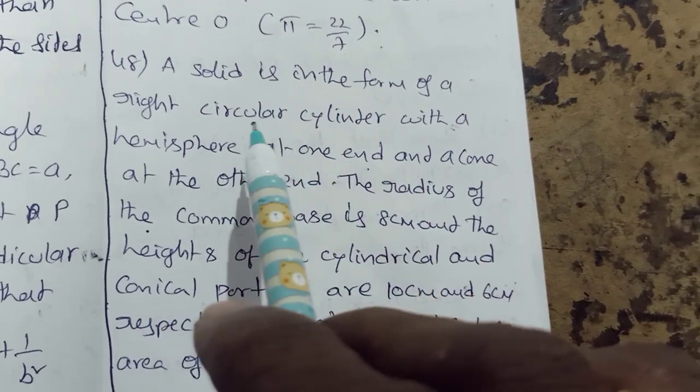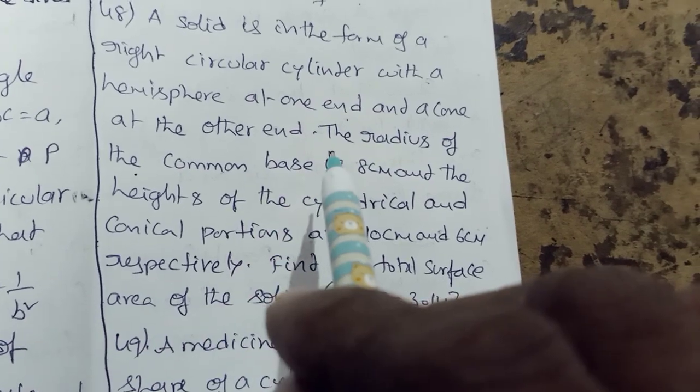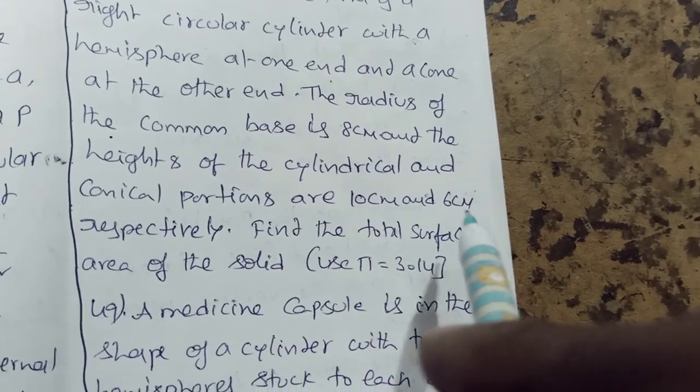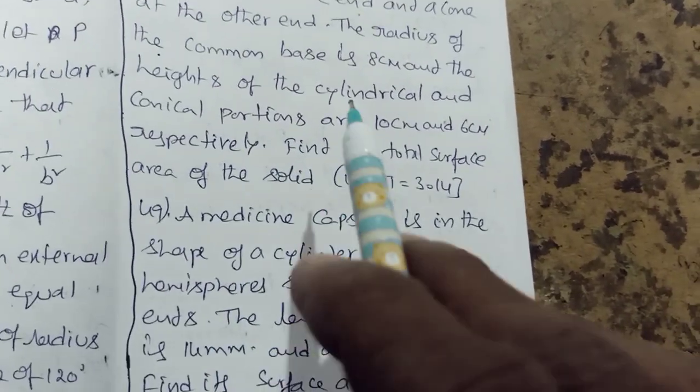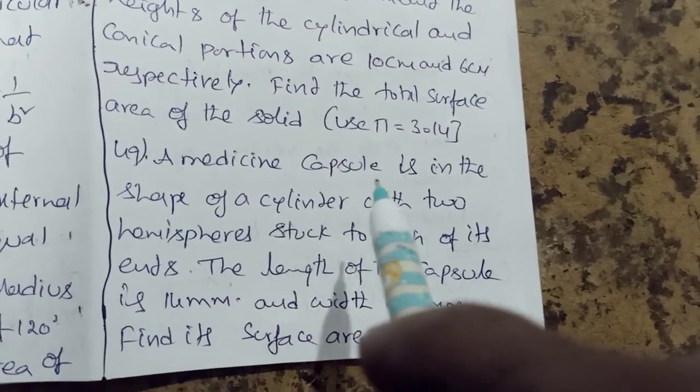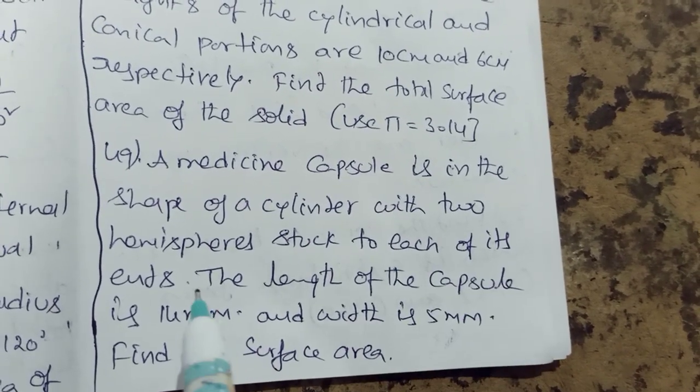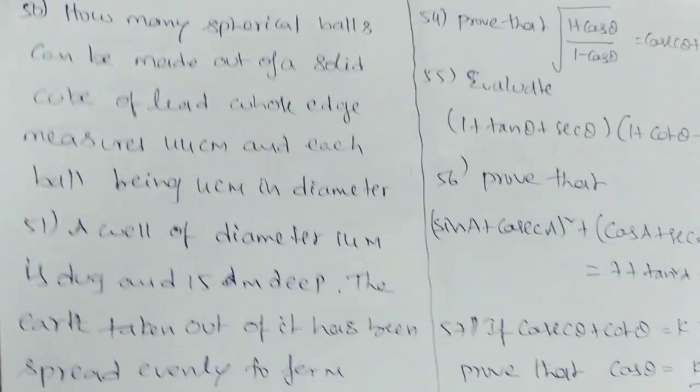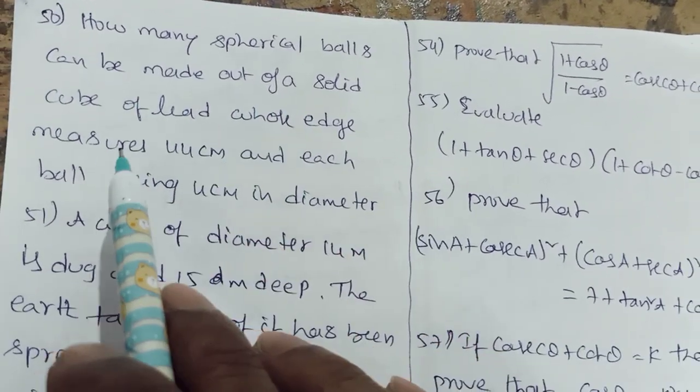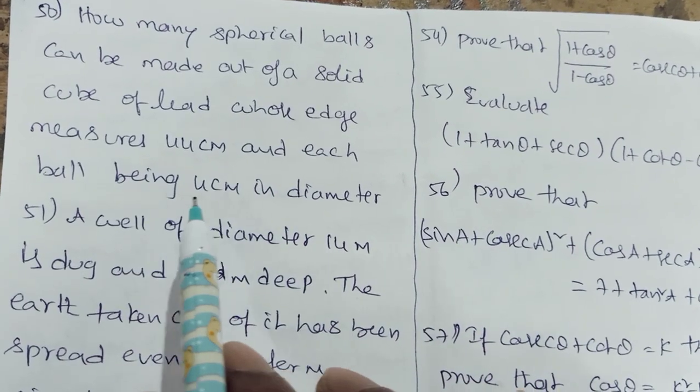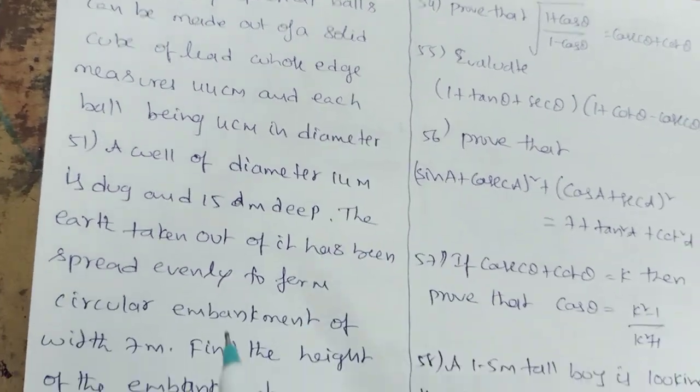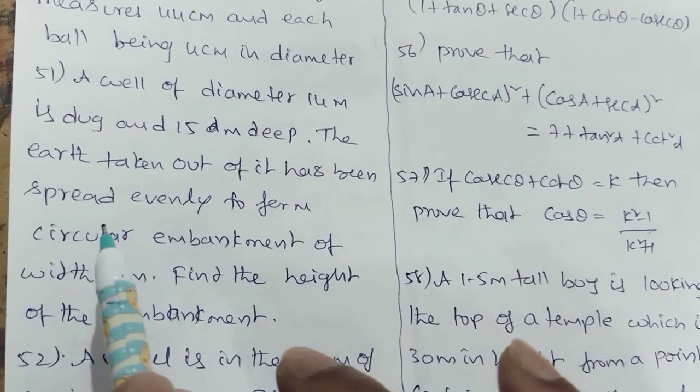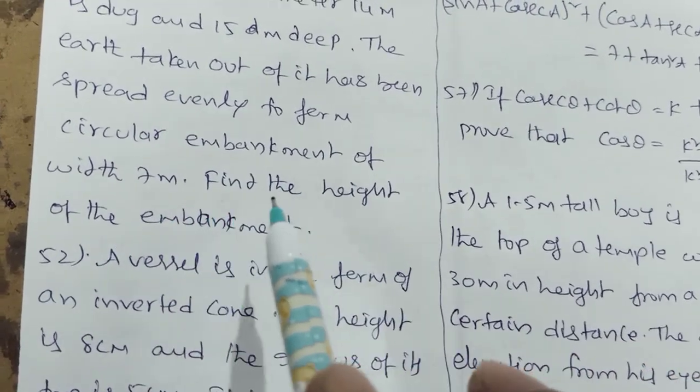A solid is in the form of a right circular cylinder with a hemisphere at one end and a cone at the other end. The radius of the common base is 8 cm and the heights of the cylindrical and conical portions are 10 cm and 6 cm respectively. Find the total surface area of the solid. A medicine capsule is in the shape of a cylinder with two hemispheres stuck to each of its ends. The length of the capsule is 14 mm and width is 5 mm. Find its surface area.